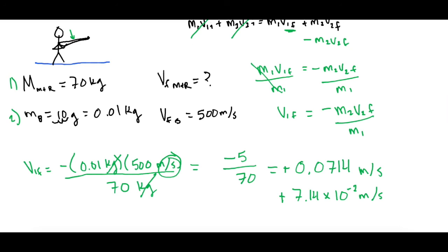So you'll have a positive 0.0714 meters per second or a positive 7.14 times 10 to the negative 2 meters per second. And that is the final speed that the guy and the gun are sliding backwards on our very slick ice.